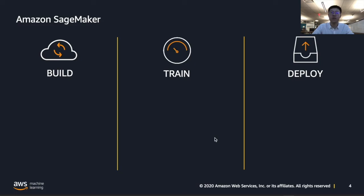Let's go into each component in more detail. When we think about build, we firstly think about the different ways you can interact with the service. Amazon SageMaker has a notebook instance, which is the quickest and easiest way to get set up with an instance that's running a Jupyter notebook server. You can use it to interactively explore and experiment with your data, run snippets of code, document your progress, and visualize your results.